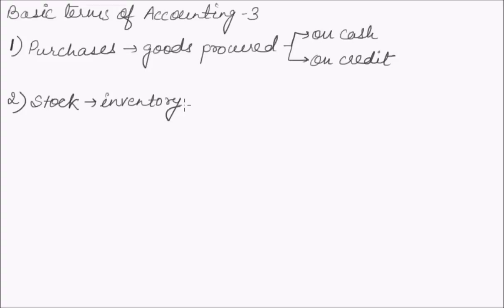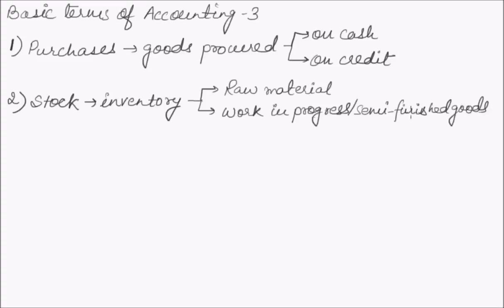In a manufacturing company, closing stock comprises raw material, work-in-progress or semi-finished goods, and finished goods. These goods at the end of the accounting period are called closing stock, which becomes opening stock for the next accounting period.